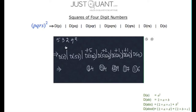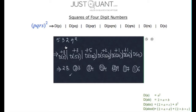Now 3 is carried over and added to the duplex of 53, which is 2 times 5 multiplied by 3. That is 3 plus 30, or 33. And finally, 3 is carried over and added to the duplex of 5, which is 3 plus 25, or 28. Hence by combining all the parts, we get the square of 5324, which is 28,344,976.